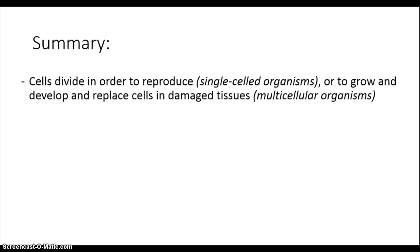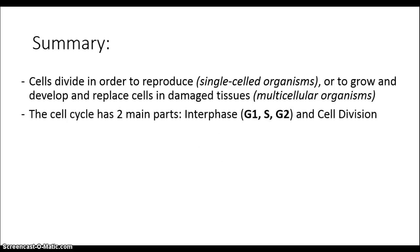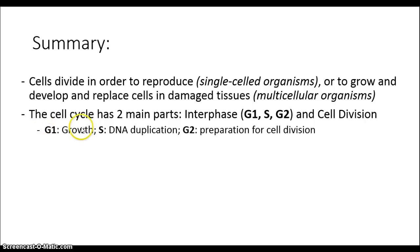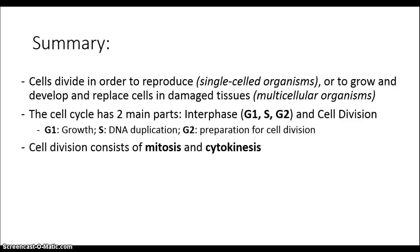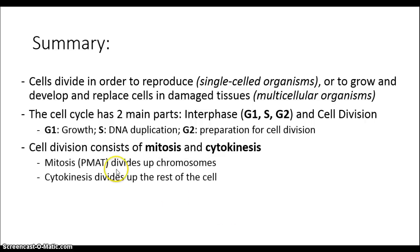In summary, cells divide for a number of reasons: in order to reproduce if you are a single-celled organism, or in order to grow and develop, or to repair any damaged tissues and replace cells that have been lost or died. The cell cycle has two main parts: interphase and cell division. Interphase consists of three different phases — growth, DNA duplication, and preparing for cell division itself. Cell division consists of two connected parts — mitosis, where you divide up the DNA, and cytokinesis, where you divide up everything else in the cell.